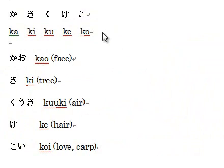I believe you already watched my previous video on how to type Japanese vowels a, i, u, e, o. In this video, I'm going to teach you how to type ka-ki-ku-ke-ko. This ka-ki-ku-ke-ko is called keiro, and this is the consonant row.